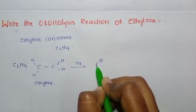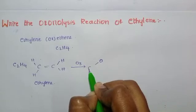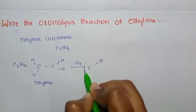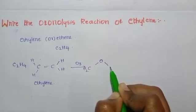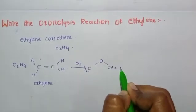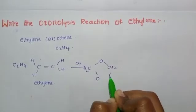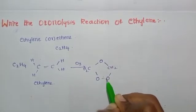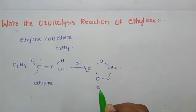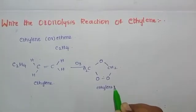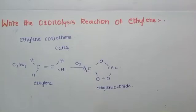We add three oxygens at this position: CH2 — one oxygen here, the second one, and the remaining third one. This gives us the ethylene ozonide. Then we use a reducing agent, which is zinc and water.